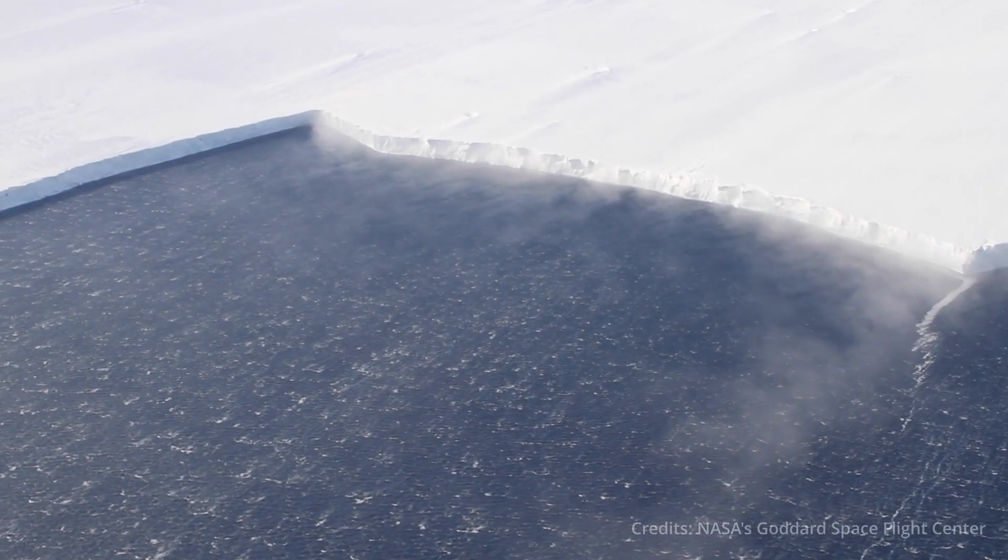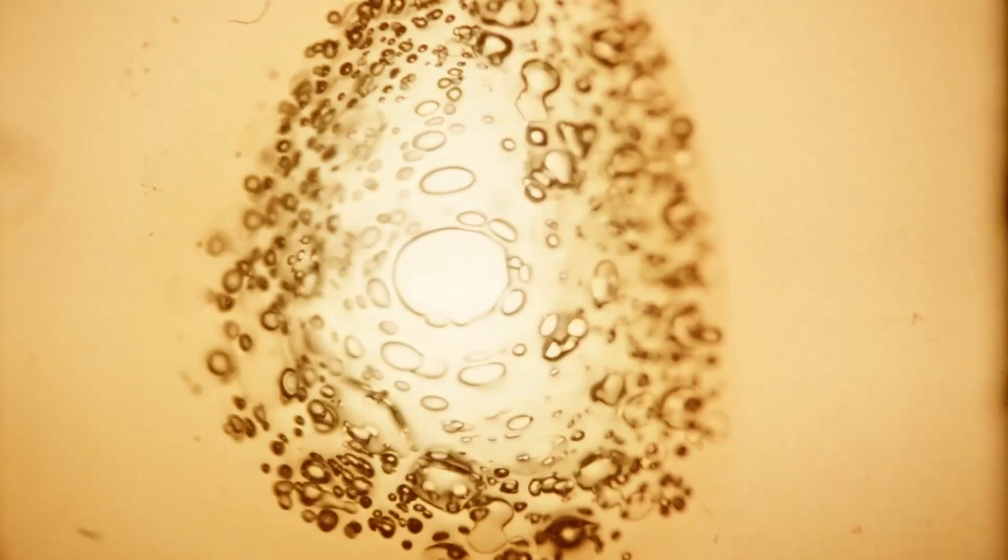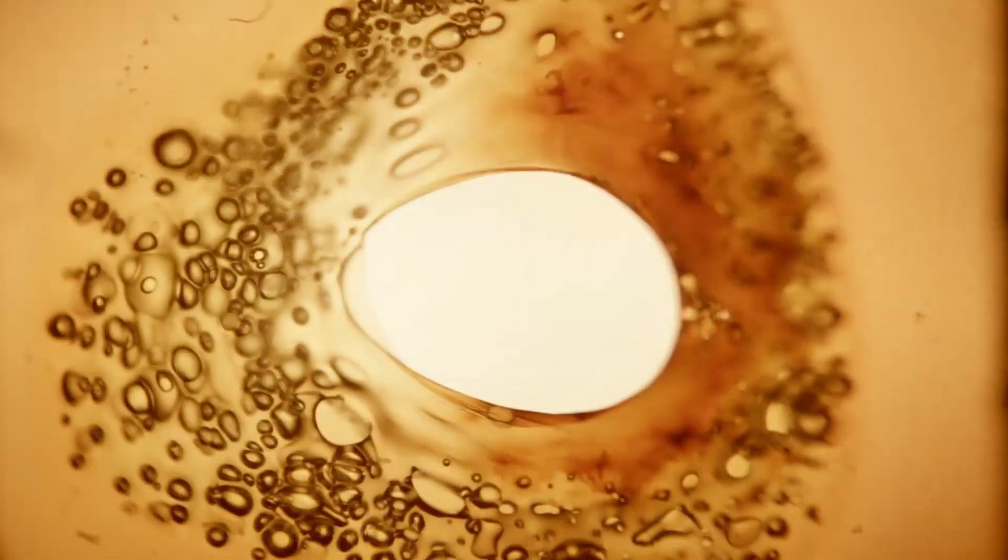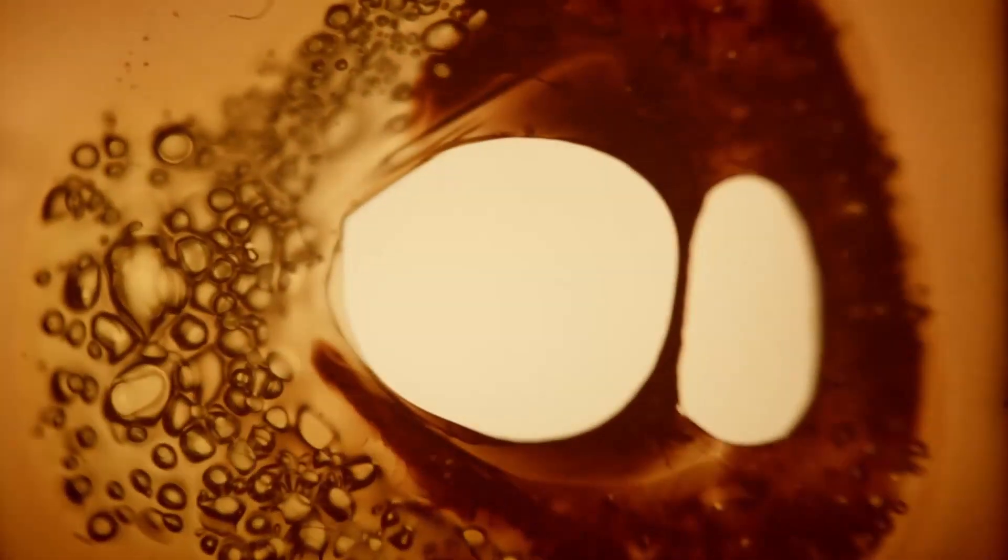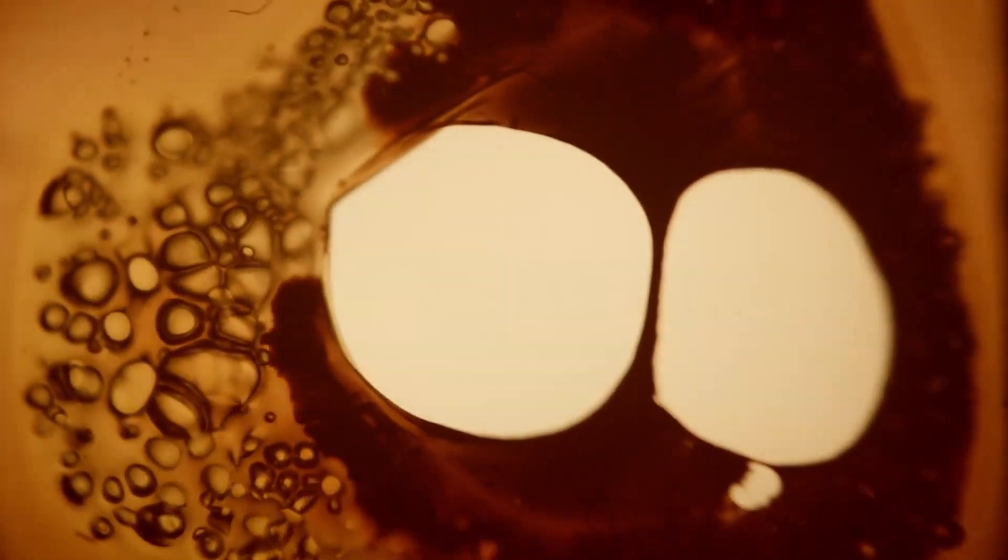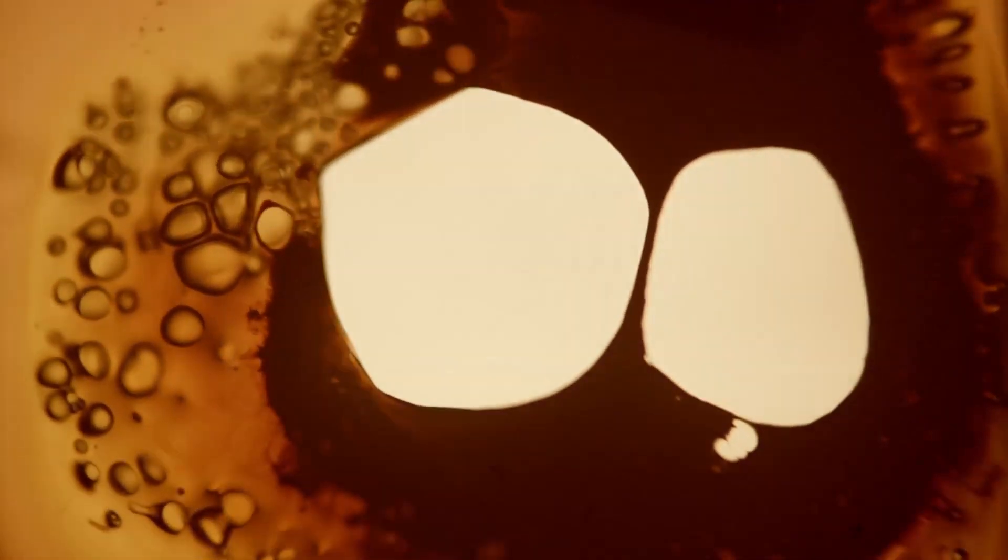Bacteria started living together in a nucleated cell. Some 2 billion years ago, different bacteria that relied on each other started living in the same membrane. Each bacteria focuses just on one aspect. Cyanobacteria became chloroplasts, and others formed the rest of the cell.